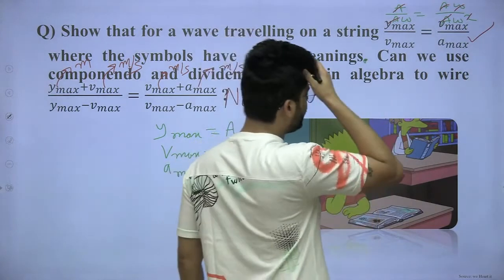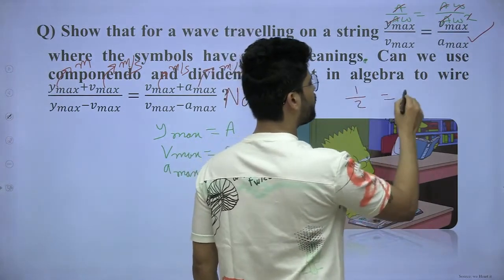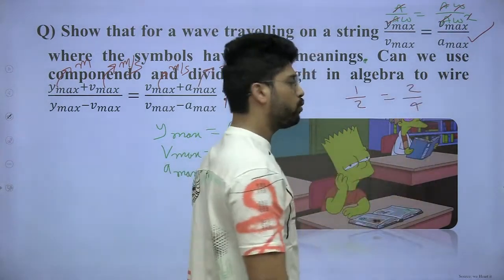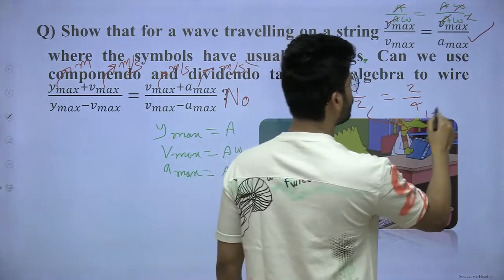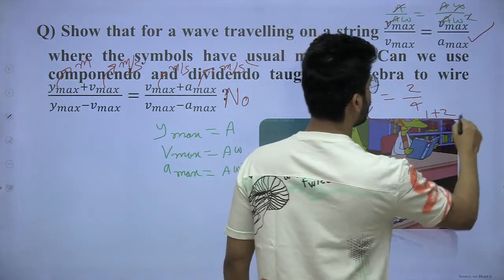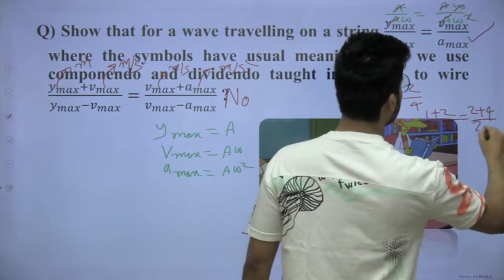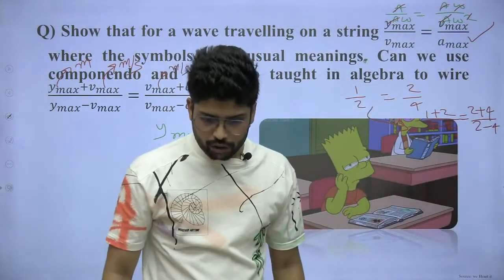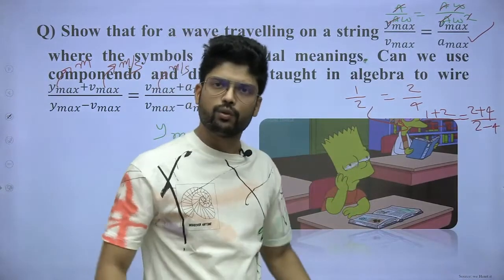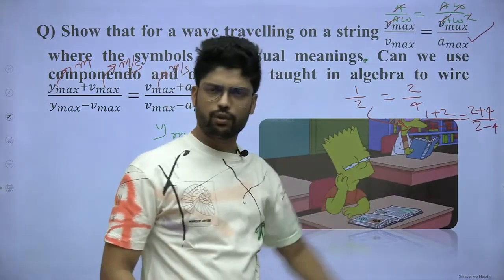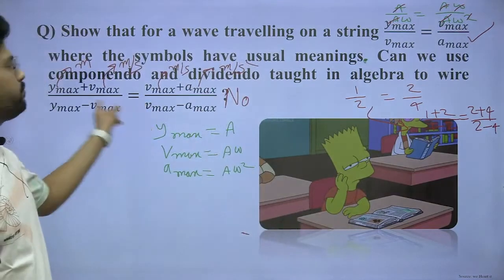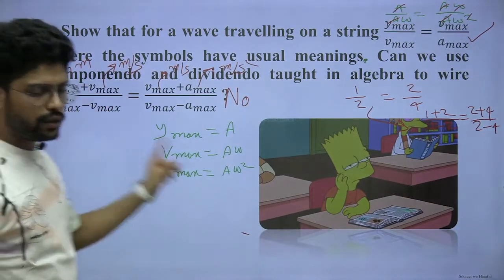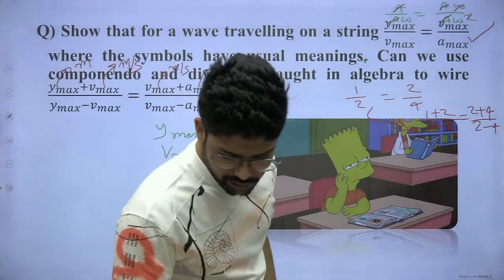Numbers like 1 by 2 equal to 2 by 4, you can apply componendo and dividendo there. You can apply on numbers. But units you cannot. Before applying, you have to cancel the units. Whatever numbers remain, you can apply on them. No problem. But you cannot apply on this equation because these have units and you cannot do this. I hope this is clear to everyone.